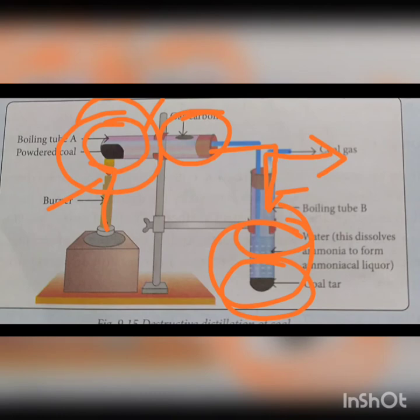We conclude that different products are obtained on the destructive distillation of coal: coal tar, gas carbon, ammoniacal liquor and coke.